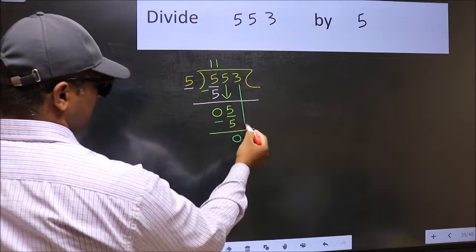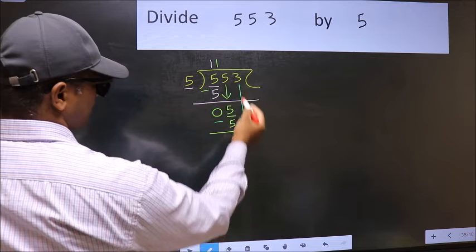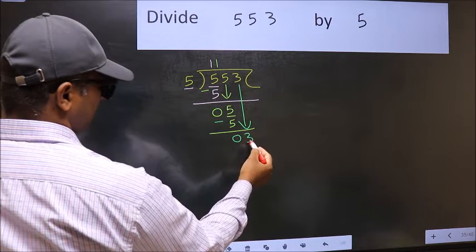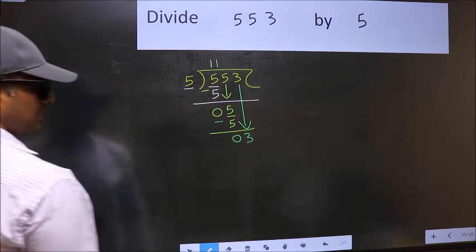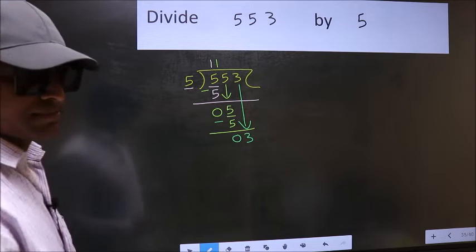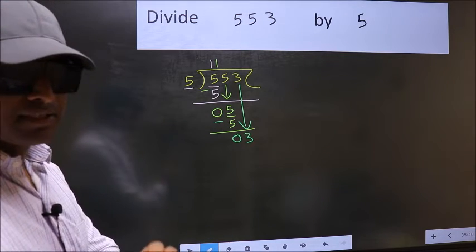After this, bring down the beside number. So 3 down. After this step, the mistake happens. And the mistake is this.